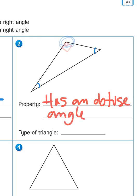So, if it has an obtuse angle, it is an obtuse triangle. See, again, the word angle helps us with that.